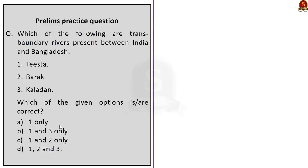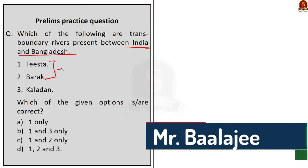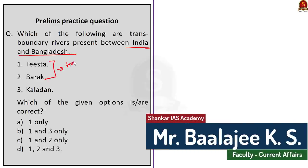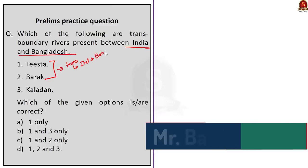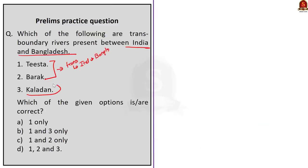Moving on to the second question. Three rivers are given and we are asked to find the transboundary rivers between India and Bangladesh. Teesta and Barak are transboundary rivers between India and Bangladesh. But Kaladan is not a transboundary river between India and Bangladesh — Kaladan is a transboundary river between India and Myanmar. The correct answer here is option C — one and two only.